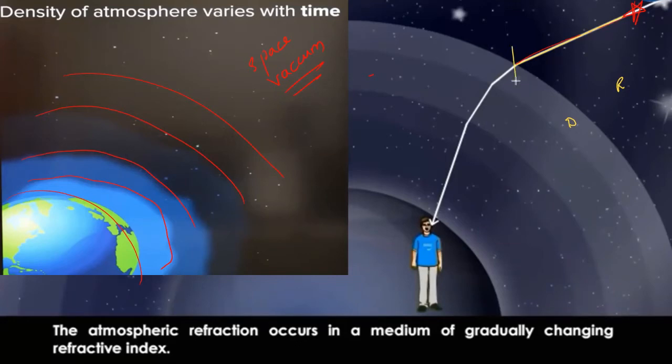Whenever light travels from rarer to denser medium, at the point of incidence it has to move towards the normal. So it is moving towards the normal. Again it enters the second layer of the atmosphere which is more denser, it will again go towards the normal. The third layer which is again more denser, again towards the normal, and finally it reaches us. So light which is coming from bodies outside the Earth's atmosphere or from vacuum does not come in a straight line.